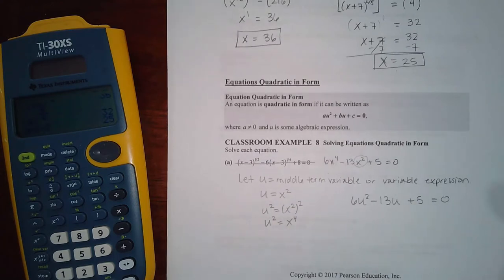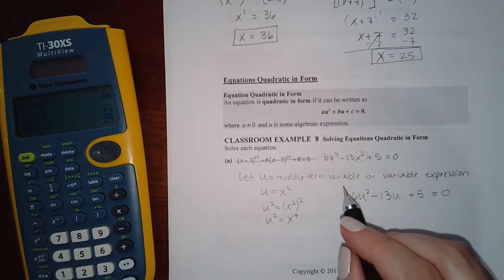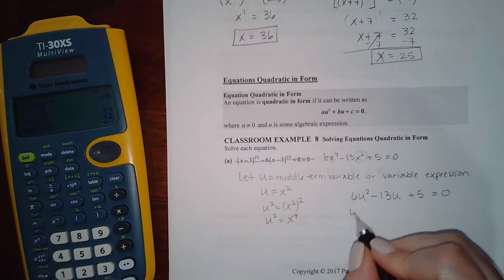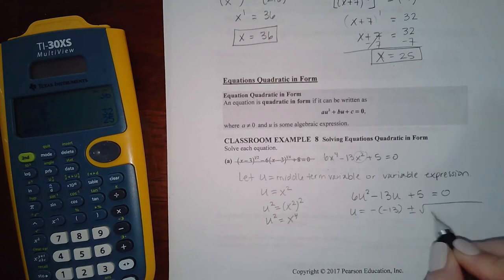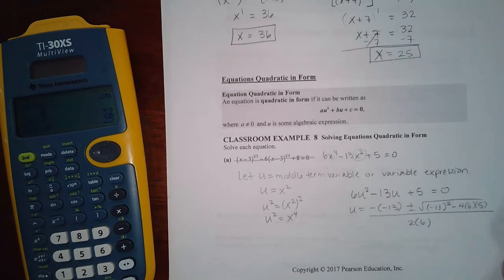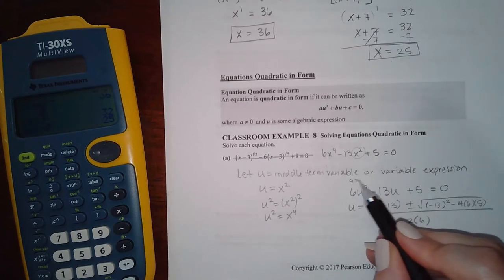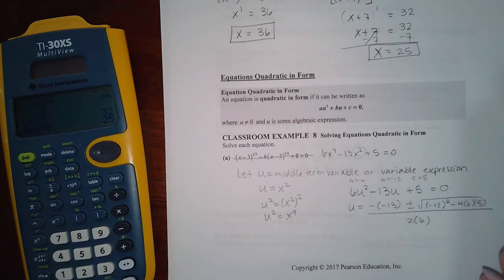And then now we can solve this using the quadratic formula. So we get u equals negative negative 13 plus or minus negative 13 squared minus 4ac all over 2 times a. Remember, a is equal to 6, b is negative 13, and c is 5.